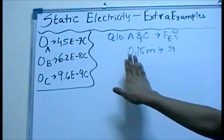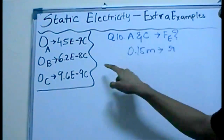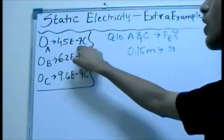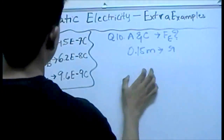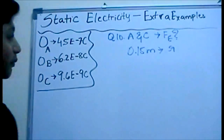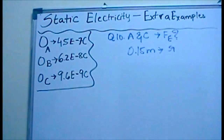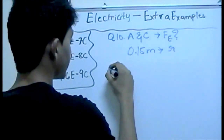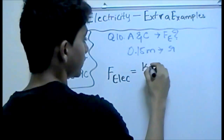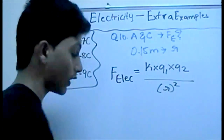The tenth question basically asks: what is the electric force between A and C? So we have charge A and charge C, and we need to find the electric force between these two objects. It says that they are 0.15 meters apart, so the distance between these two charges is 0.15 meters.